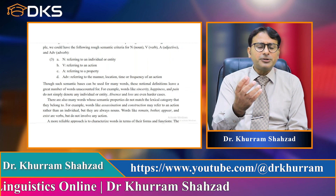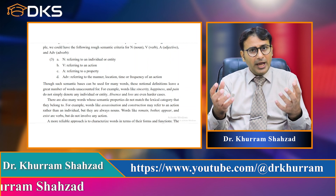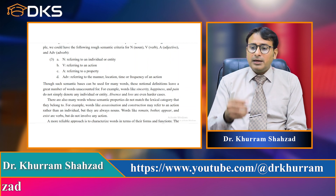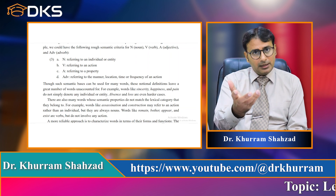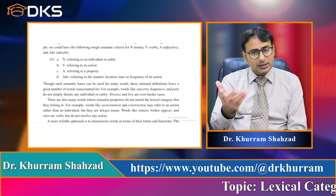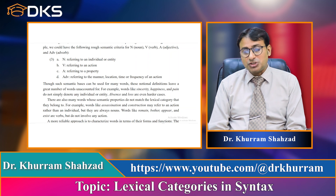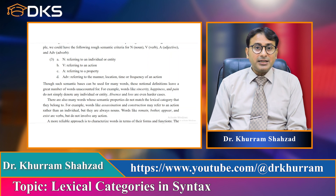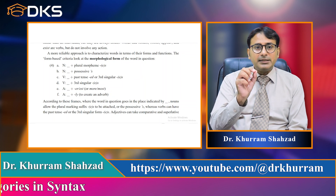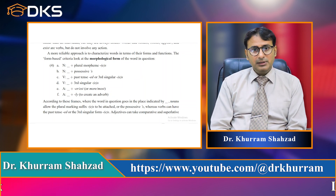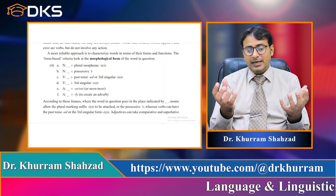Verb usually refers to an action. But what about 'appear,' 'remain,' 'exist'? Do they show any kind of action? Adjective refers to a property — the property of a thing. 'Good boy,' 'good girl' — goodness is the property of the boy or girl here. But words like 'assassination' and 'construction' may refer to an action rather than an individual, but they are always nouns. So the criterion of meaning is not very reliable when talking about how lexical categories can be formed.